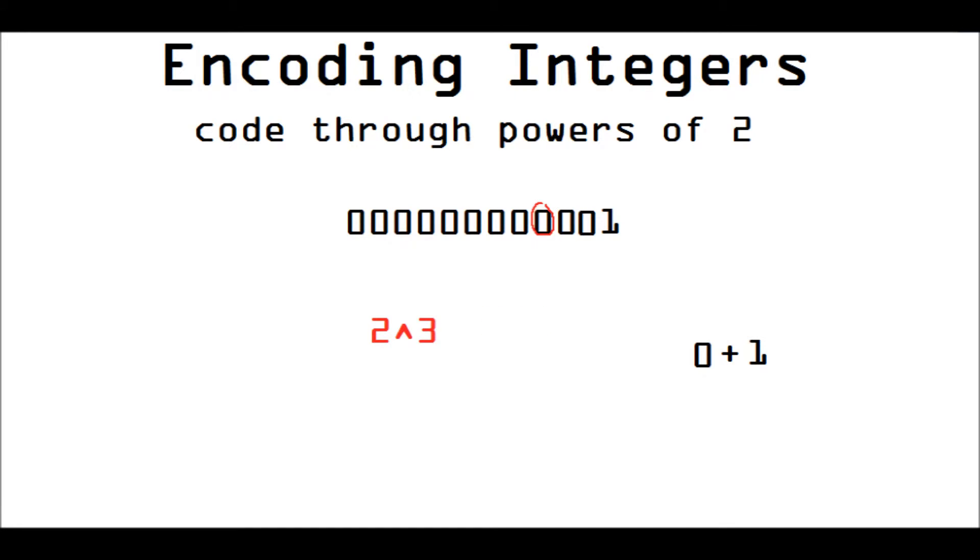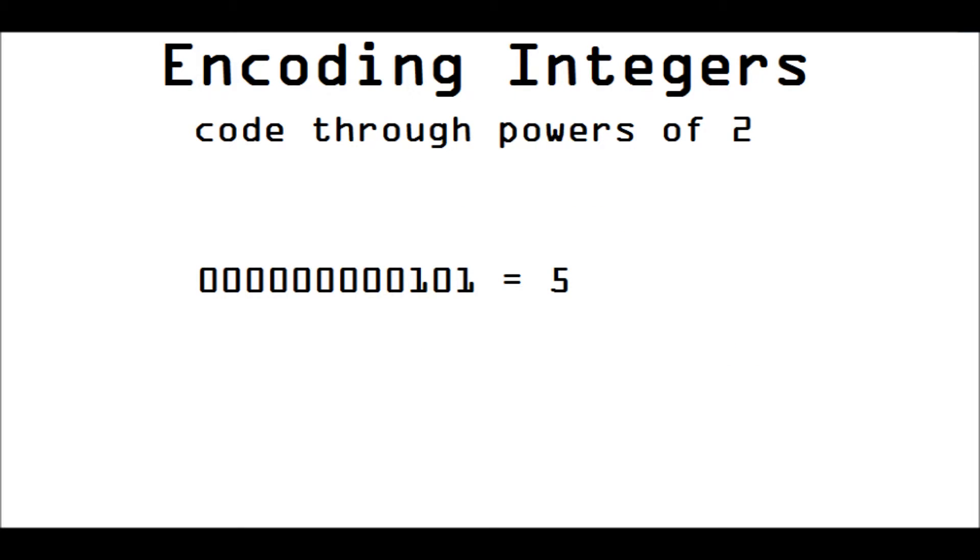So, this binary number 101 equals five because one times two to the two plus one times two to the zero equals four plus one equals five.